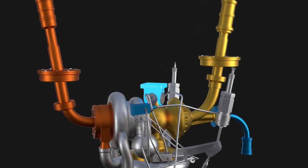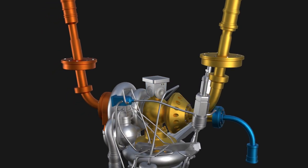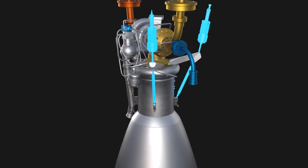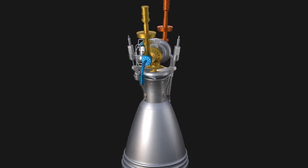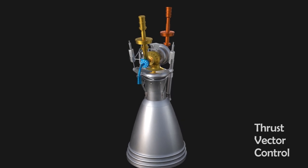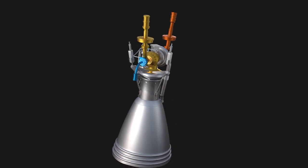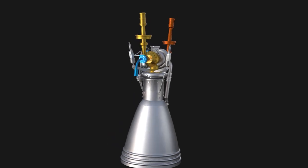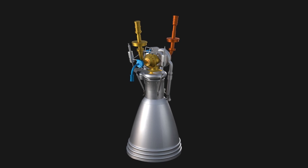This is the mounting plate where the engine is mounted to the rocket body. There are two hydraulic actuators that tilt the entire engine around two axes, which is also called thrust vector control or TVC. It changes the direction of the engine exhaust in order to stabilize or manipulate the direction of the rocket stages in flight.